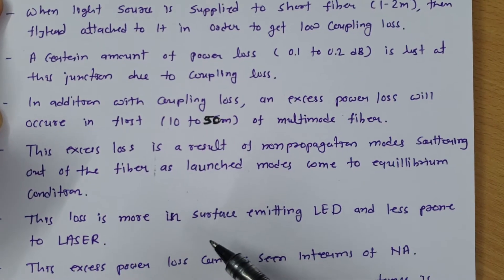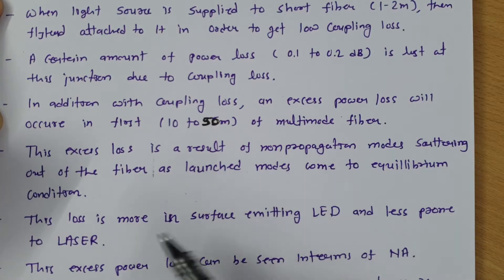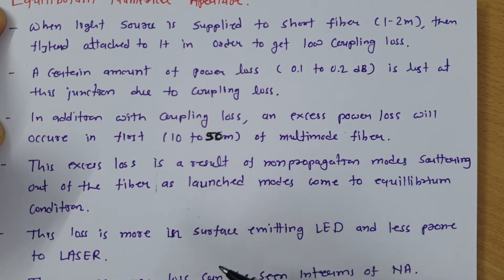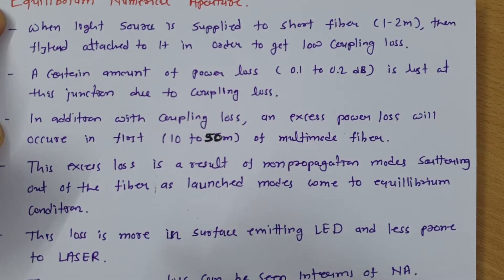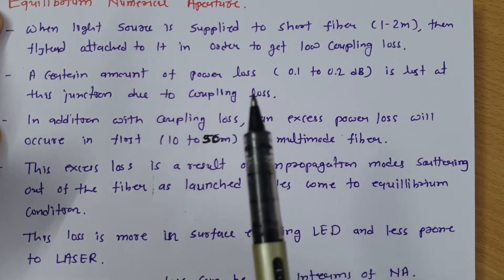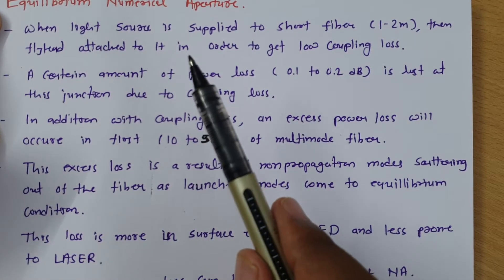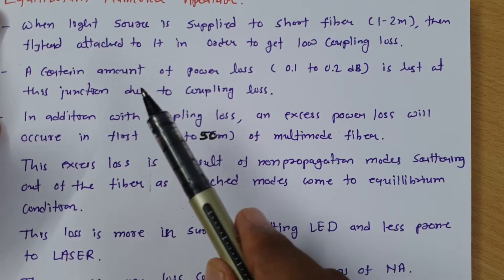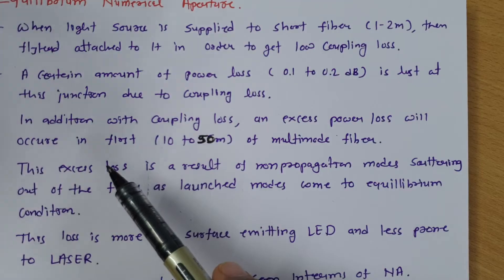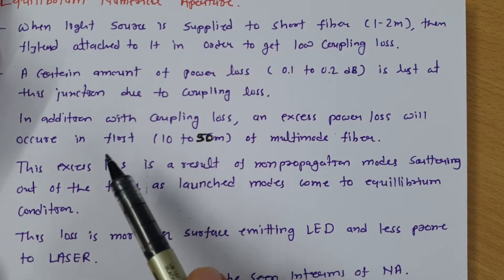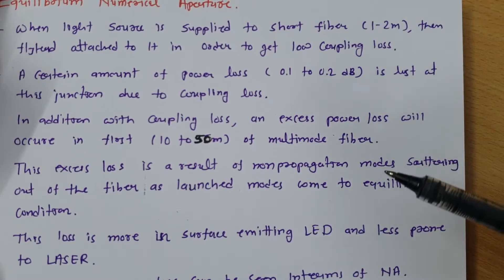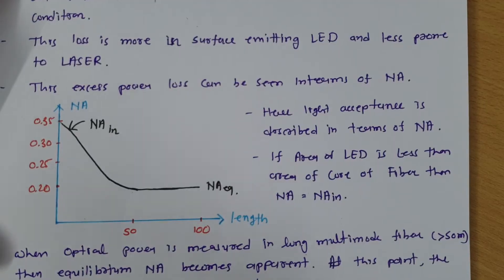This excess loss is more in surface-emitting LED and less in laser, as laser is less prone to scattering. When we apply light to a short length of fiber, this excess loss will be more. But for long length of fiber, this excess loss will be less, as the scattered non-propagating modes radiate out of the fiber. You will find this excess loss of modes actually degrading with respect to length.